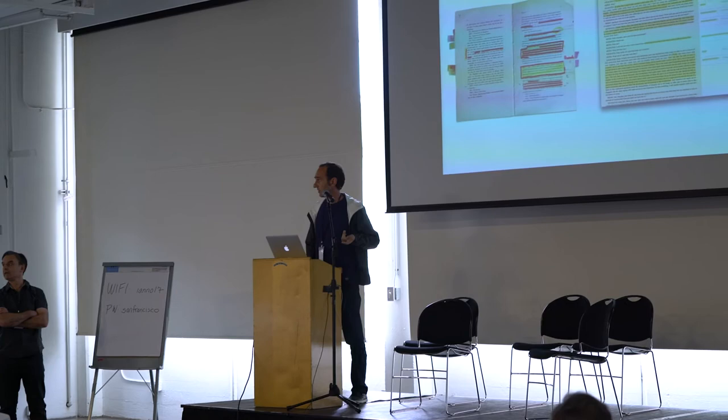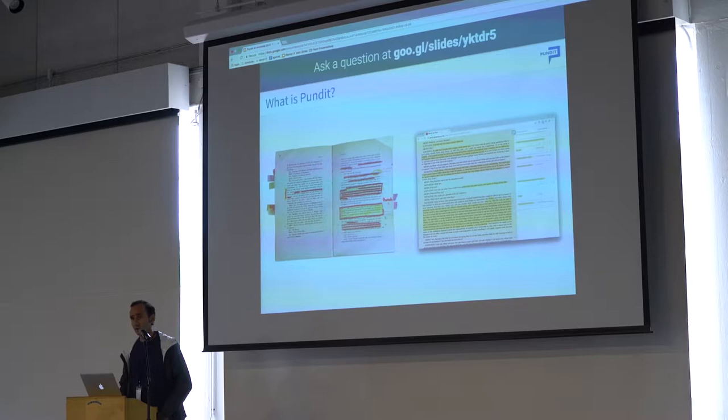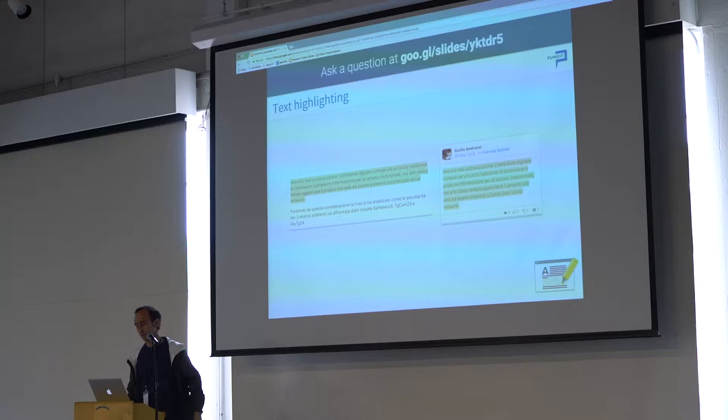Pundit is a web annotator we've been designing since 2011. It does the same thing you're used to doing on books — you can do it on the web. You can select some part of text and mark it up.